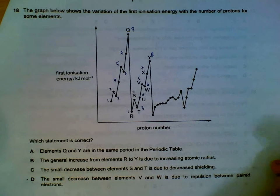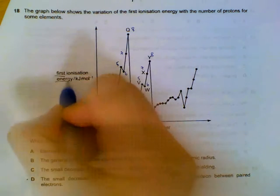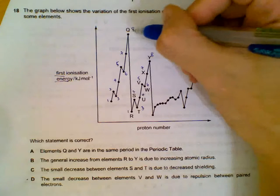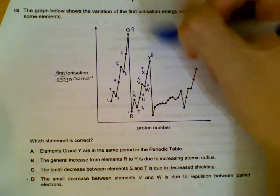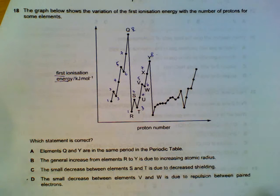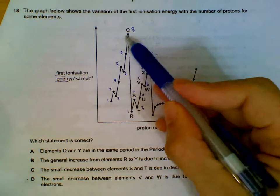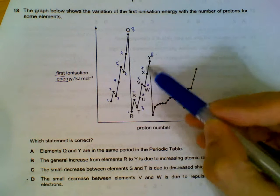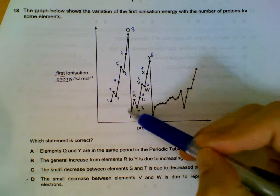Question 18 shows the variation of first ionization energy. The peaks at Q and Y are from Group 8. Working backwards, the preceding elements will be Group 7 all the way to Group 1 on the left.